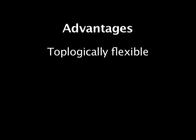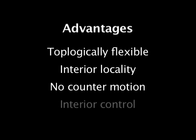In summary, we've presented a new volume deformation method called harmonic coordinates that significantly improves on existing volume deformations. Advantages of the method include: it is topologically flexible; it possesses interior locality, that is, influences fall off with distances measured within the cage; it eliminates counter deformation; and finally, it allows for optional interior vertices, edges, and faces to be added for additional control when desired. Together, these features make harmonic coordinates a powerful new technique for the articulation of high-quality characters.